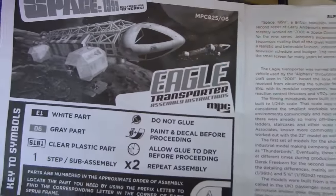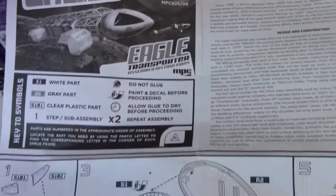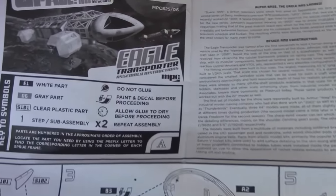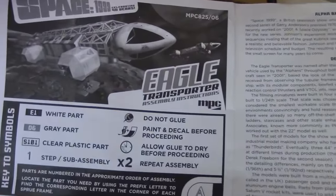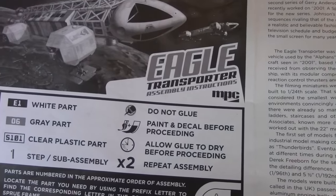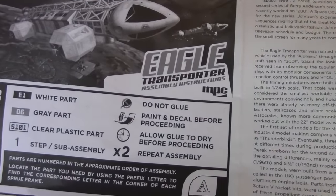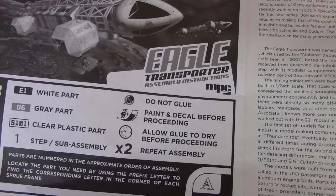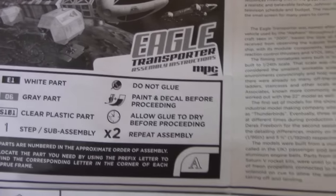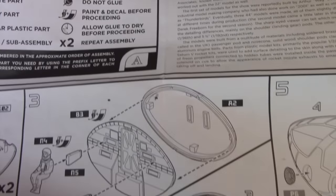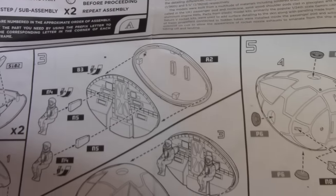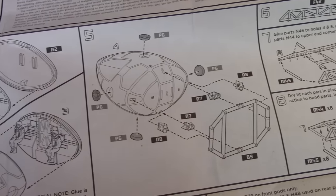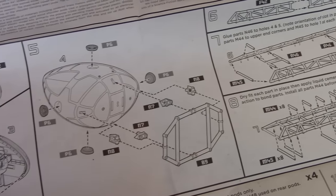Hey everybody, and welcome to another Interstellar Modeler. In this video, what I'm going to do is revisit the Space 1999 Eagle Transporter. This is the 1/48 scale model by MPC in Round 2. And instead of going through an entire build with you, because I've already done that, I'm just going to concentrate on so many extra things I've been doing with lighting.